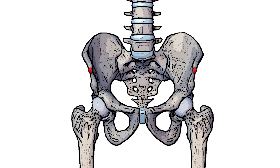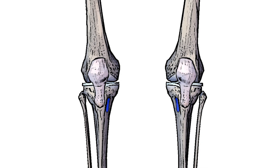Specifically, that's on the superior and anterior portion of the iliac spine. So if you want to describe where the sartorius muscle is originating, we would say it was on the superior anterior portion of the iliac spine. Next we can see marked out here in blue the insertion of the sartorius muscle, and specifically that's on the tibia.